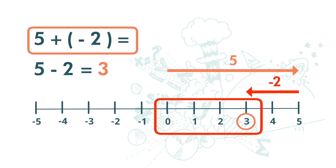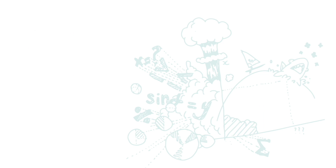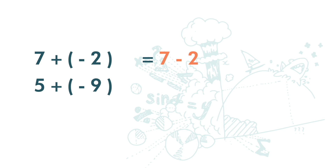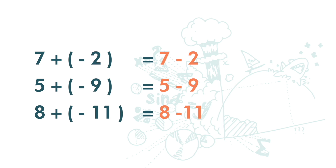5 plus negative 2 is the same as 5 minus 2, which equals 3. Let's quickly go through the following: 7 plus negative 2 is the same as 7 minus 2; 5 plus negative 9 is the same as 5 minus 9; 8 plus negative 11 is the same as 8 minus 11.